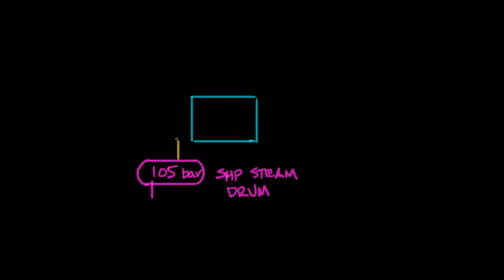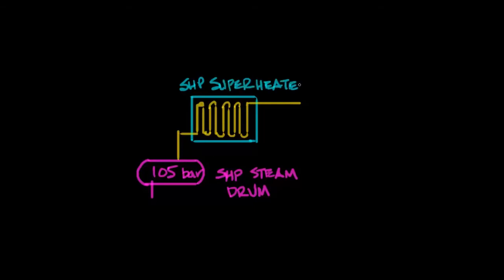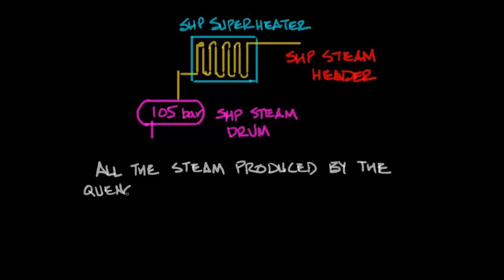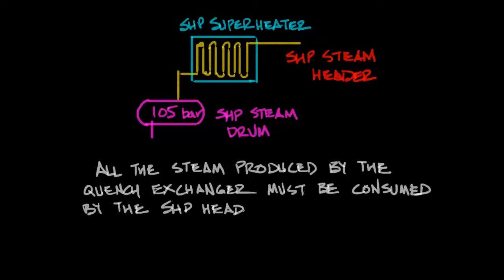After the steam drum there's a super heater also heated by the hot product. What comes out of the super heater is going to be very hot high pressure steam generally around 100 bar steam. All the steam that's produced by the quench exchanger has to be consumed by the super high pressure header. There's no place else for it to go.